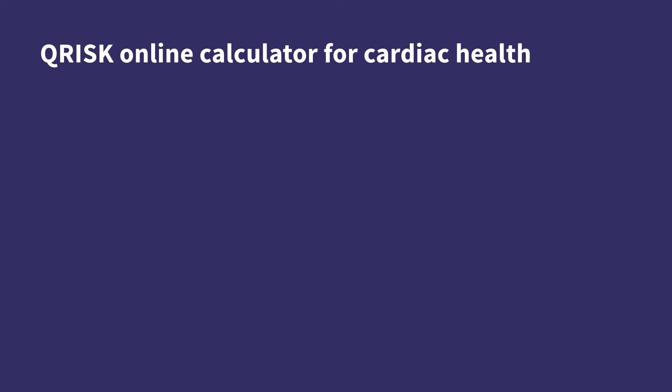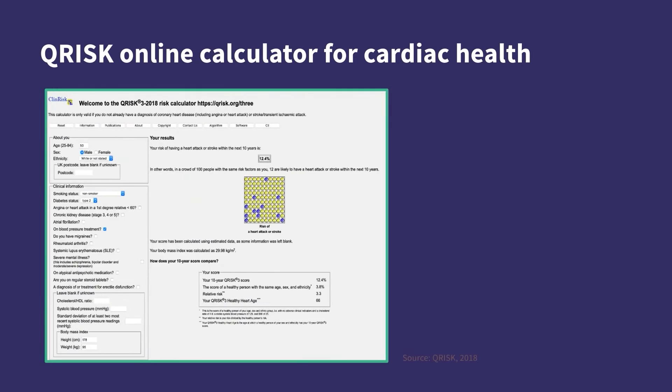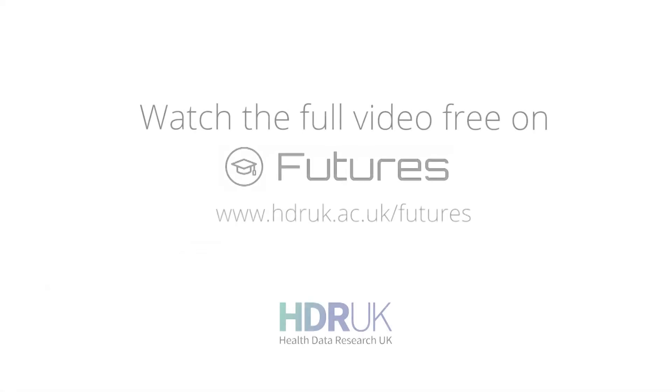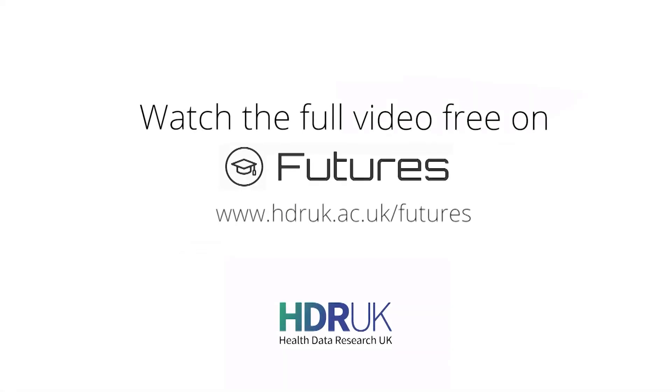For example, suppose John goes to see his doctor for a regular health checkup. The doctor inputs information about John's past medical history and John's current age, blood pressure, height and weight etc. into a prediction model called Q-Risk. Q-Risk uses this information to calculate the risk that John will have a heart attack or stroke within the next 10 years.